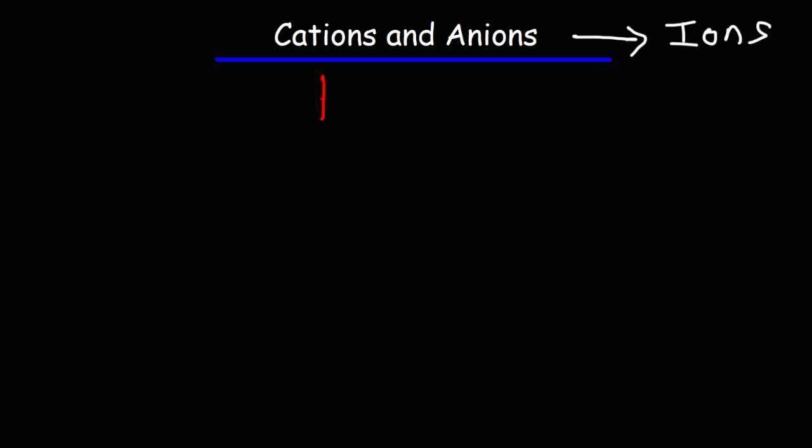So cations are ions with positive charges. They have more protons than electrons. Anions are ions with negative charges. They have more electrons than protons.